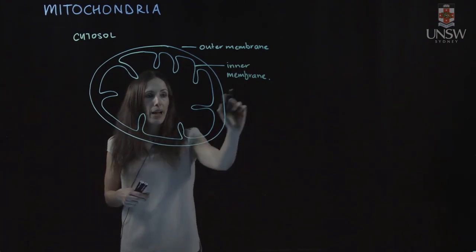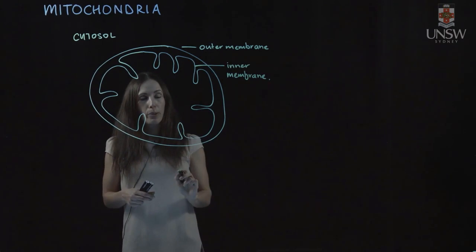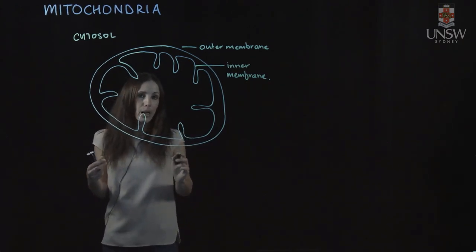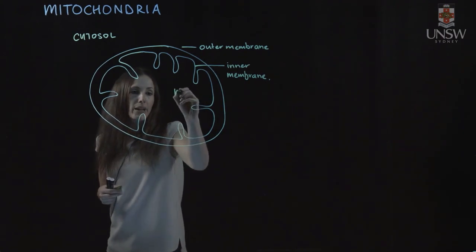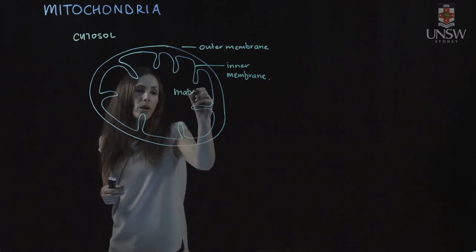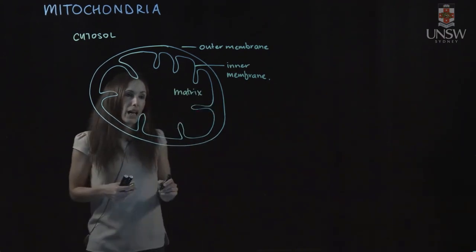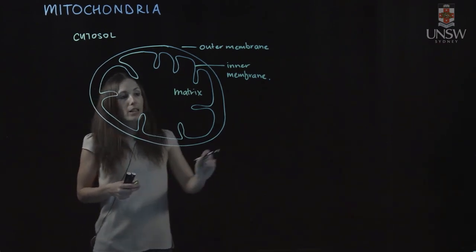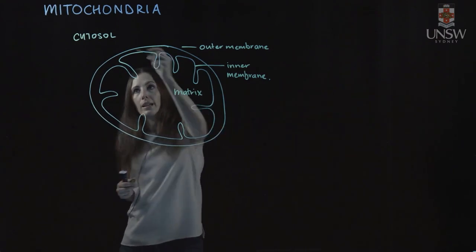So the inner membrane is selectively permeable, and that means that it lets some things through and not others, so that the matrix, which is what we call the fluid inside the mitochondria, has a different concentration of ions to that that's outside in the cytosol.